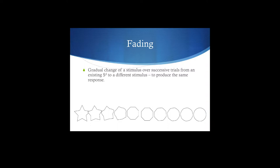So gradual change of a stimulus over successive trials. Right off the bat, you should see a couple of things. Number one, we're not going to make gigantic changes here. And number two, what we're going to do is do this repeatedly, over and over again. That's the successive trials part.